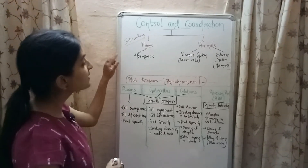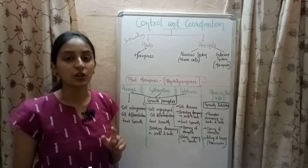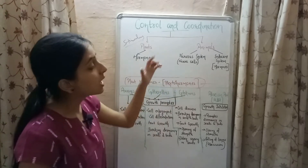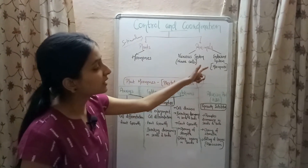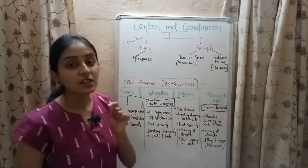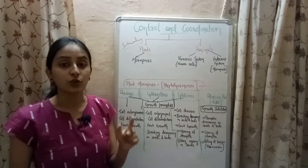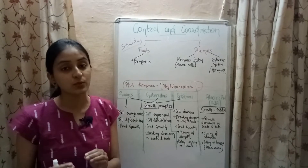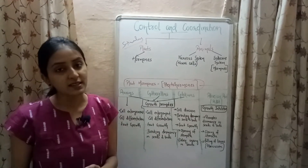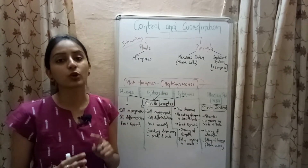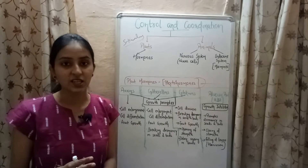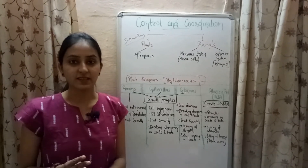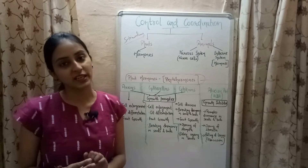The process of control and coordination takes place in both plants and animals. In plants, hormones are responsible for control and coordination, whereas in animals both the endocrine system (hormones) and the nervous system (nerve cells) are responsible for control and coordination.